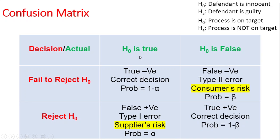First, if your defendant is innocent and the court fails to reject this, that is called a true negative — a correct decision where the defendant is innocent and the court rules him innocent. On the other hand, if the defendant is guilty and the court finds him guilty, that is a true positive, and the probability for this is one minus beta, where one minus beta is the power.